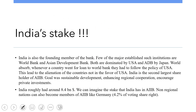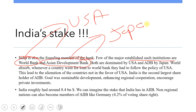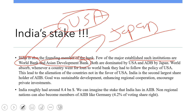India is a founding member — when this bank was being formed, India was involved from the start. Other major institutions already exist: the World Bank dominated by USA, and the Asian Development Bank dominated by Japan. Any country wanting a loan must follow the policies of the USA or Japan, which alienates smaller or weaker countries. This alienation led to the creation of AIIB, established in 2016 and formed in December 2015.